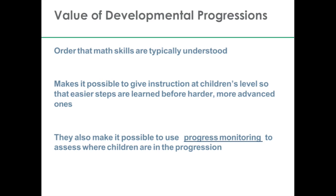Some of these steps are learned before the more advanced steps. If there is a developmental progression, it's also possible to use progress monitoring to assess where the children are in the progression. So it's possible to use little tasks that have been prepared to see where the child actually is, or to use the common activities already being done in early math to get a sense of where the child is in the developmental progression. Then we can use this information from progress monitoring to identify instruction approaches and content at the appropriate level to help the child make the next steps.